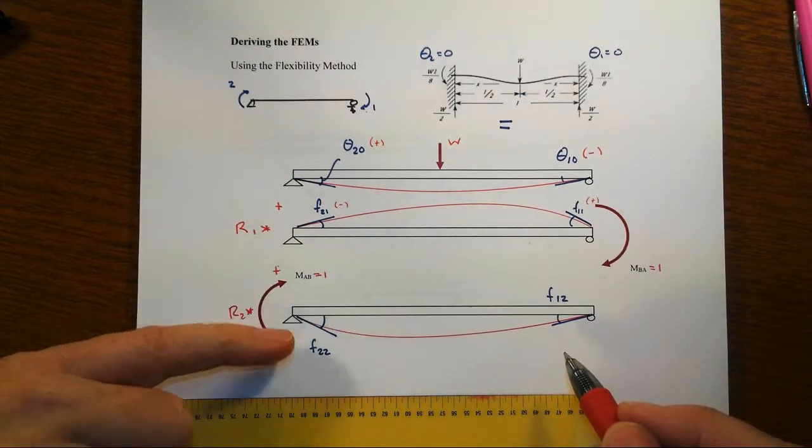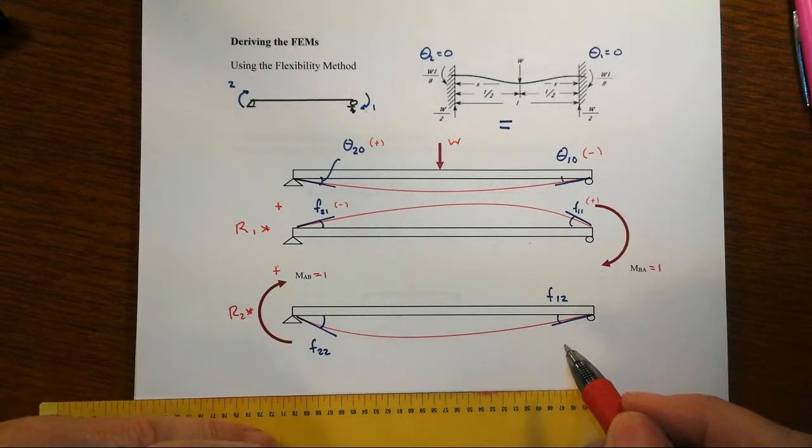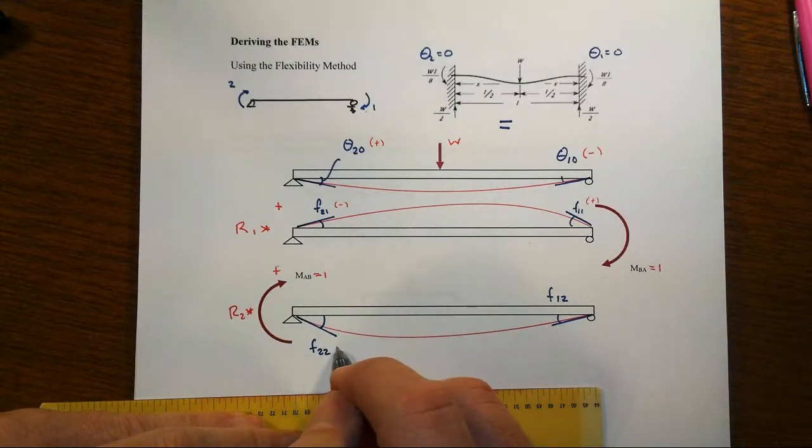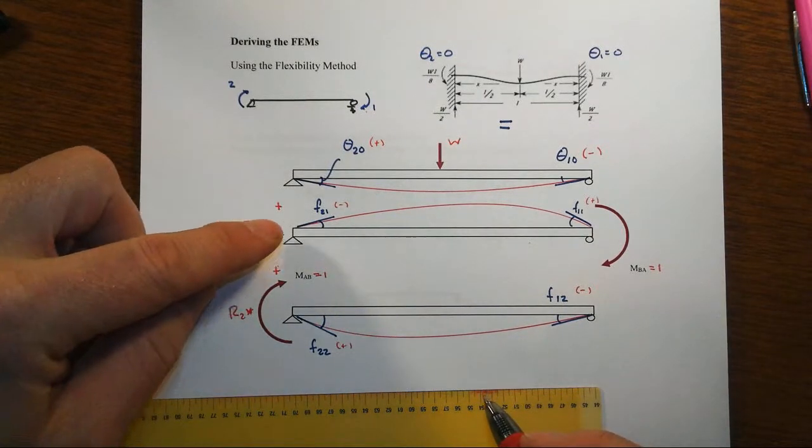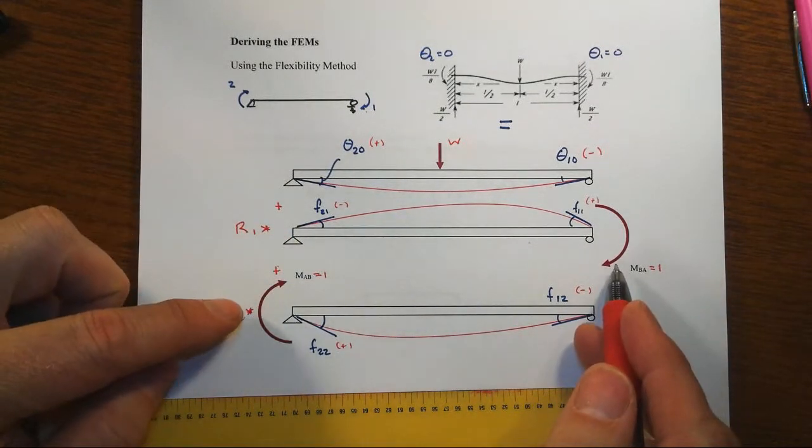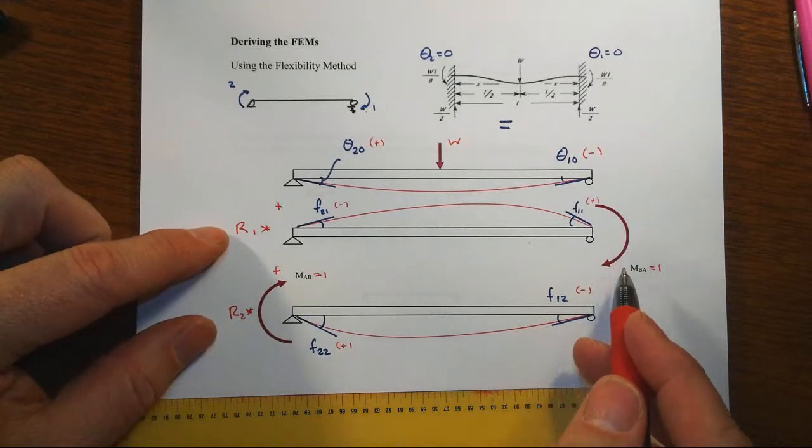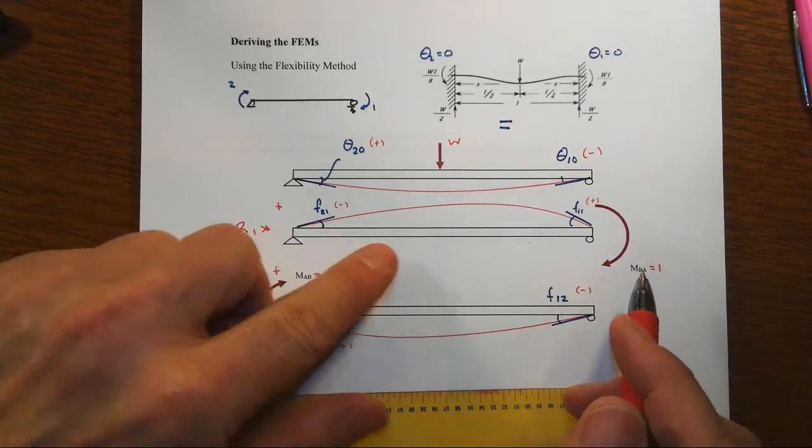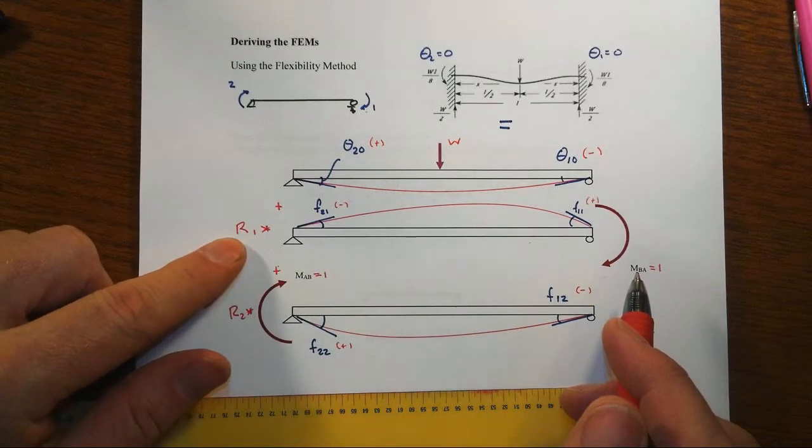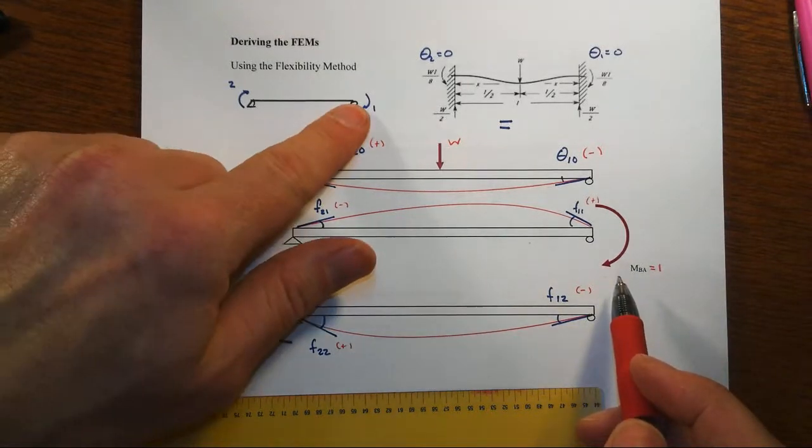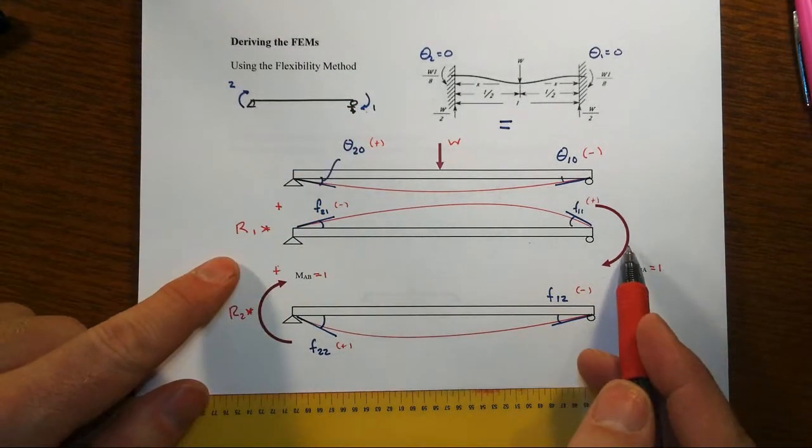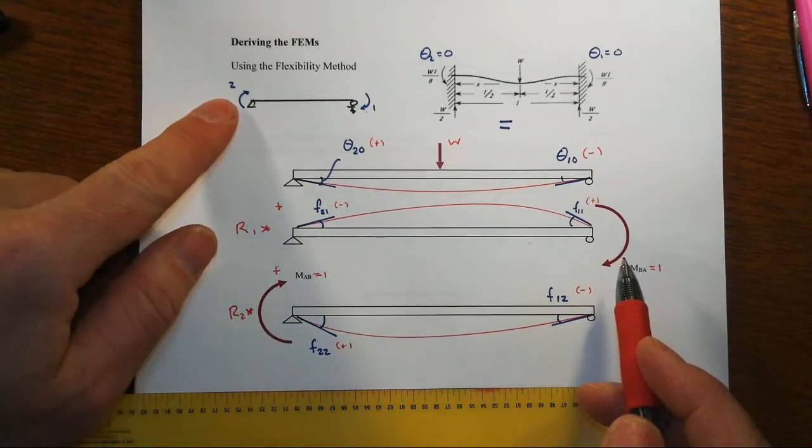Likewise, we add to it the system when we put the unit load on the other end, and so on and so forth. We don't know what the actual end reaction values are—that's the whole point of the flexibility method, is to find those. So we have to multiply this middle case by the actual but unknown value of the redundant reaction R_1, and then R_2, the moment at the left.